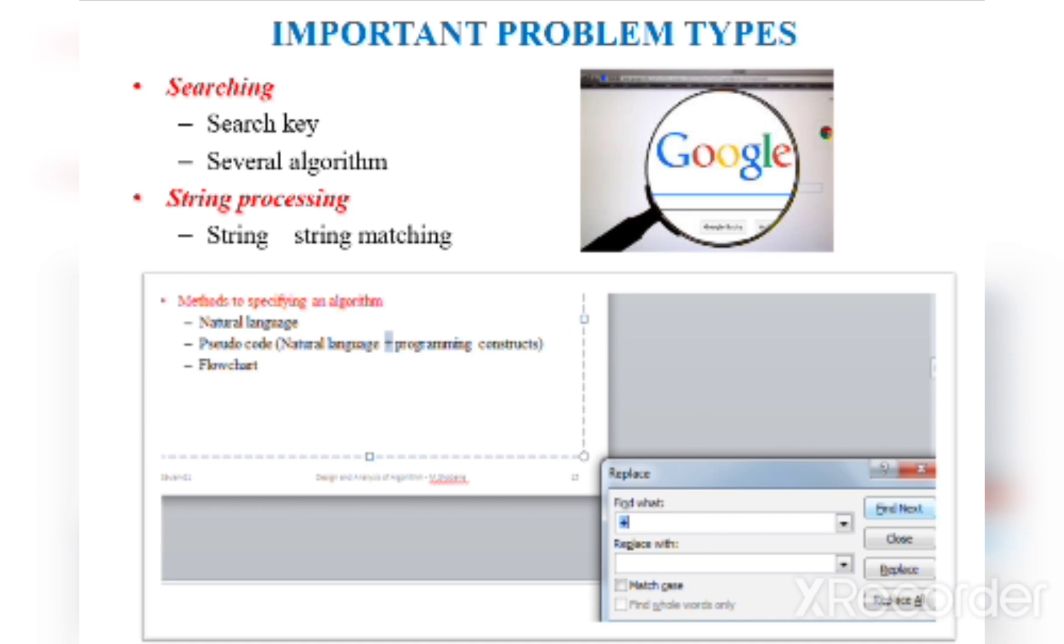In searching, Google uses PageRank algorithm to rank their web pages. The third important problem type is string processing. Here we'll be using string matching or pattern matching. If a string or pattern is given, we'll be searching for that pattern in the entire string and will find whether the string is available or not.